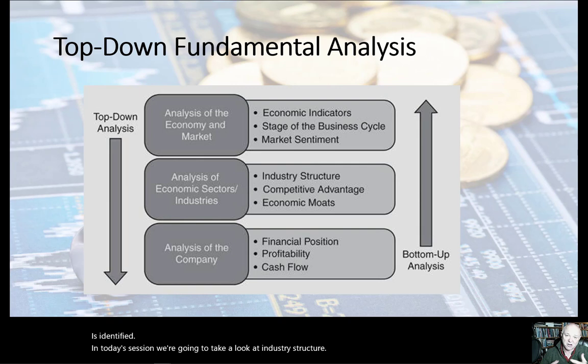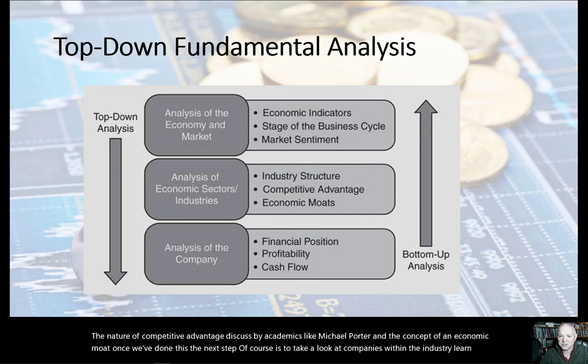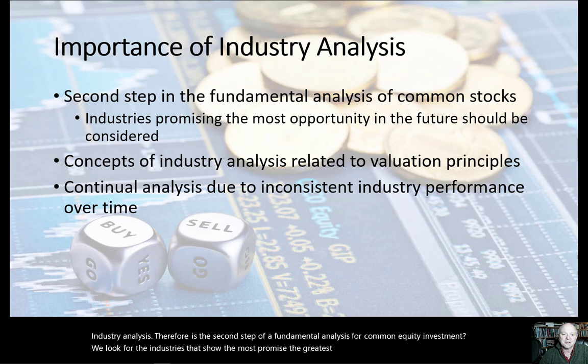In today's session we're going to take a look at industry structure and how companies are classified within industries, the nature of competitive advantage as discussed by academics like Michael Porter, and the concept of an economic moat. The next step after this is to look at companies within the industry and learn how to pick winners and identify losers. Industry analysis is the second step of a fundamental analysis for common equity investment — we look for industries that show the most promise and the greatest potential for growth.